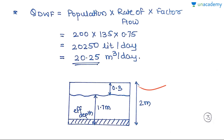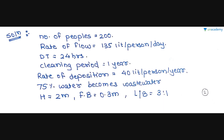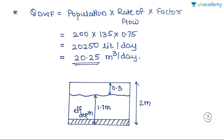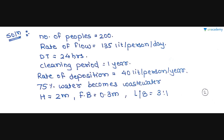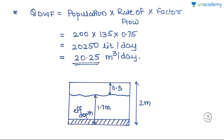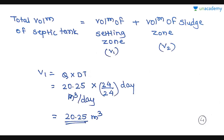This diagram shows the height. Total depth is given as 2 metres, and the free board is 0.3 metres, so the remaining portion is the effective depth. 2 minus 0.3 gives us 1.7 metres as the effective depth.